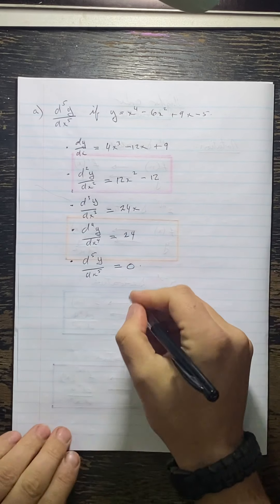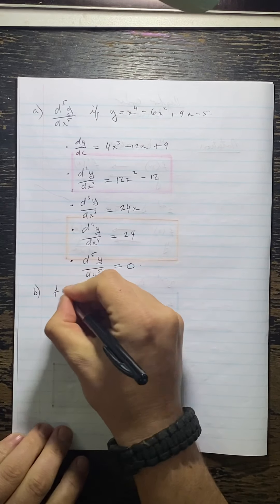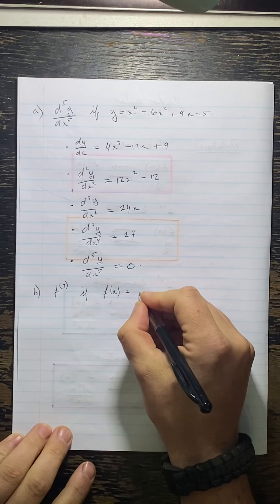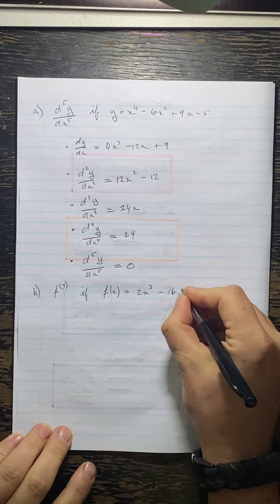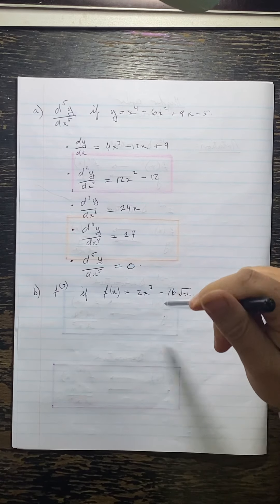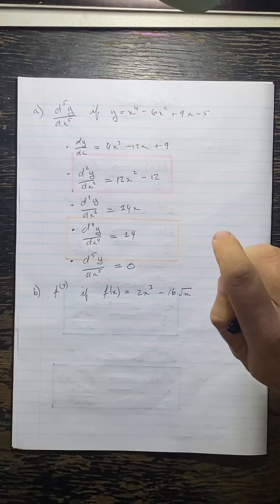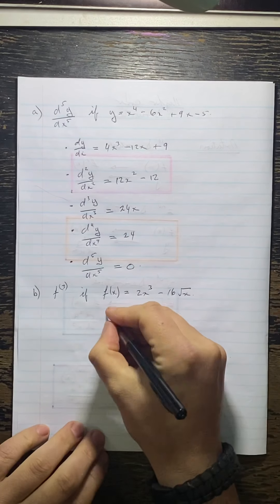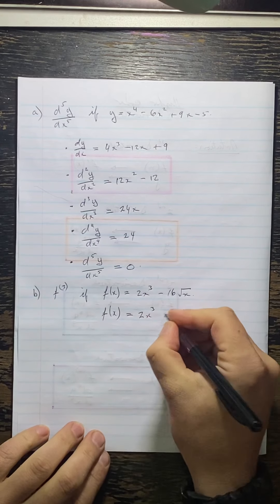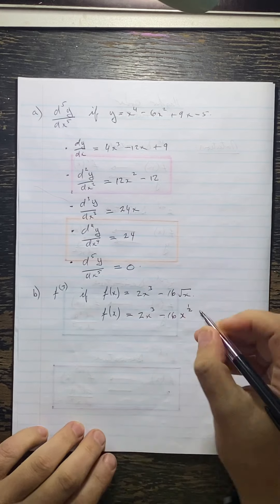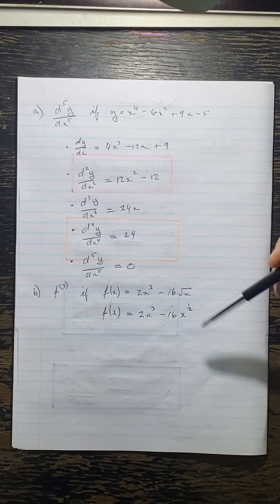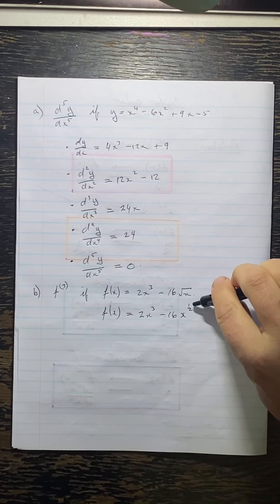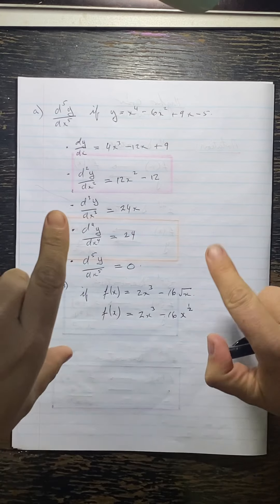Let's go to the second example. They're asking us to find the third derivative if f(x) equals 2x³ minus 16 root x. This is what I was talking about regarding polynomial form. I'm going to first rewrite it: f(x) equals 2x³ minus 16x to the power of a half. The reason is so I can differentiate it more easily. Yes, this is not a polynomial — that's why I put it in inverted commas — I just want the powers up at the top in the numerator and not in the denominator.